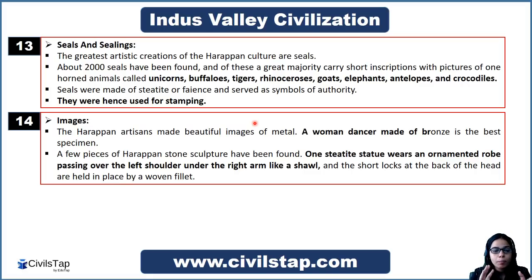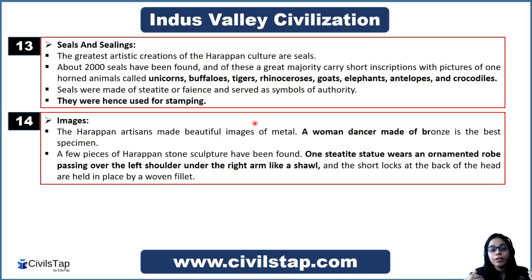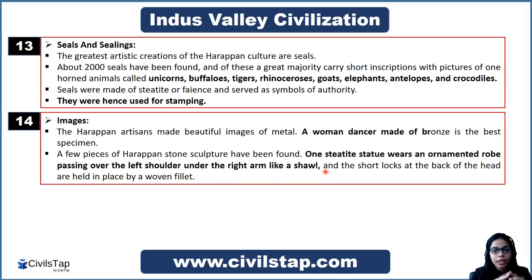From Indus Valley Civilization, we also have important images and sculptures. They made beautiful metal images — the most notable is a bronze female dancer figurine, which is the best example of Harappan art and sculpture. We also get a steatite stone sculpture of what is likely a priest, depicted with an ornamented robe passing over the left shoulder and under the right arm like a shawl. These two sculptures are the most important ones from the civilization.